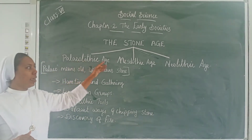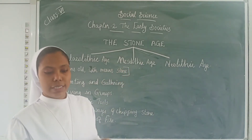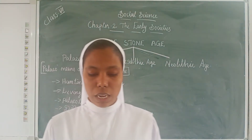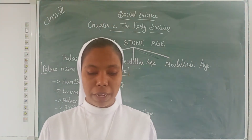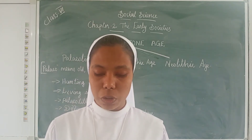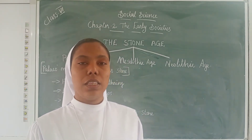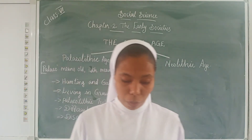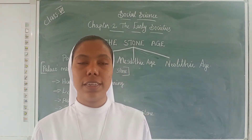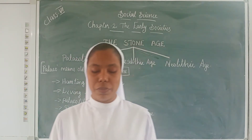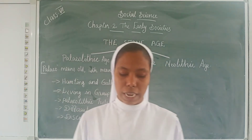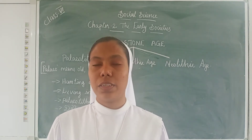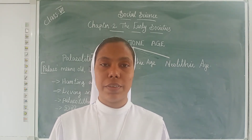The Stone Age is divided into three periods: the Paleolithic Age, the Mesolithic Age, and the Neolithic Age. Apart from stone, man also used bone, wood, and animal materials to make tools and weapons. In this chapter, we will learn about the life of people during the Stone Age.